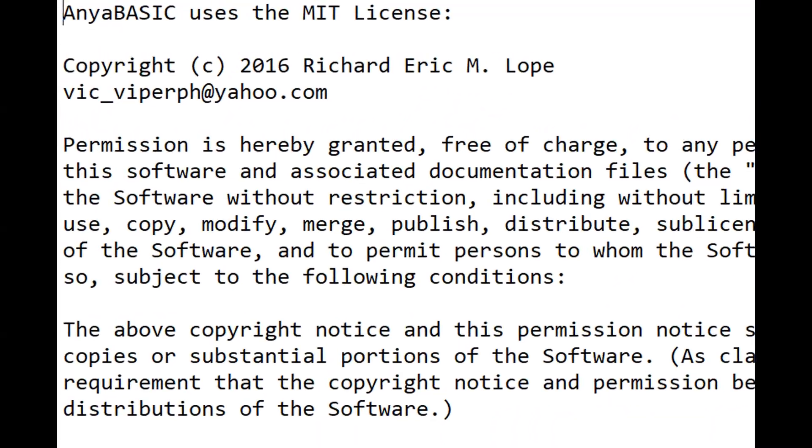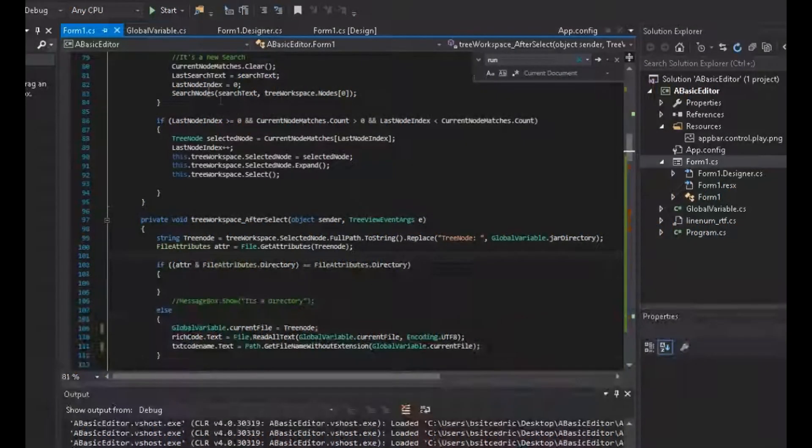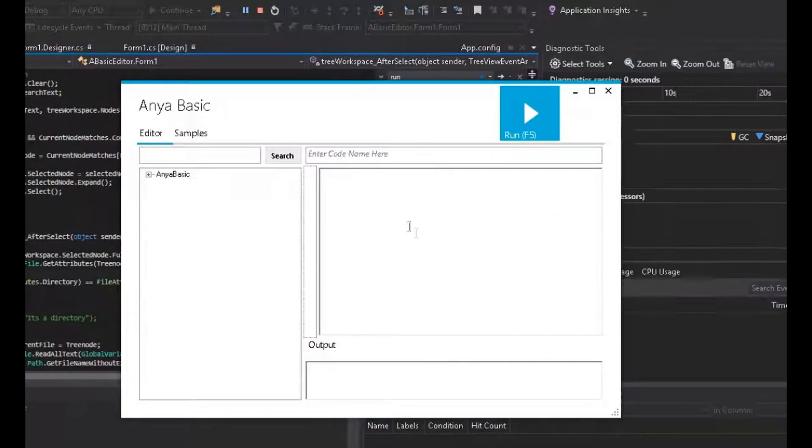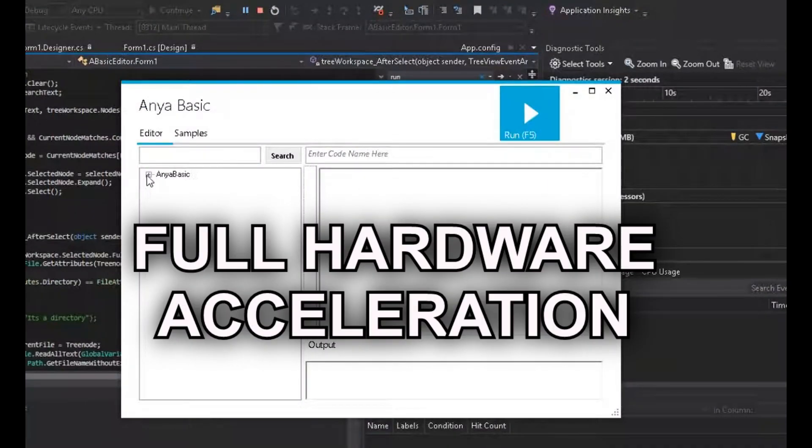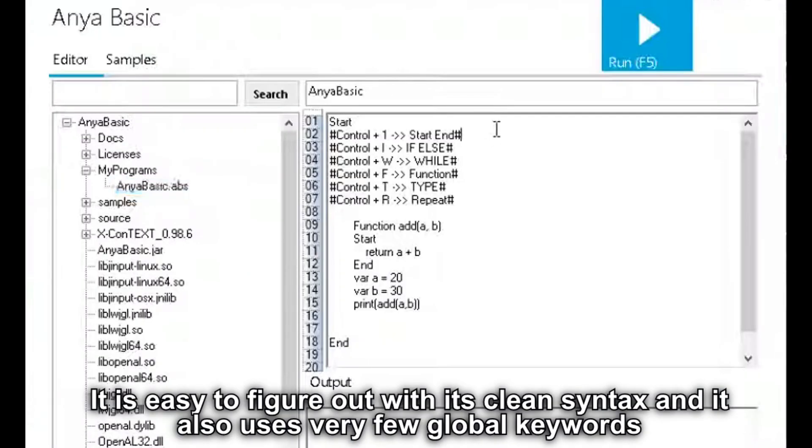Anya Basic uses the MIT license. That means it's free to use for either non-commercial or commercial purposes. It is very easy to use and has several features of full hardware acceleration. Anya Basic is as loosely typed as any language can get. It is easy to figure out with its clean syntax, and it also uses very few global keywords.